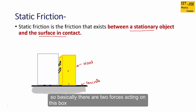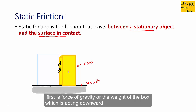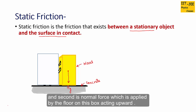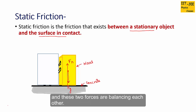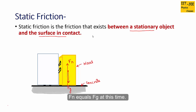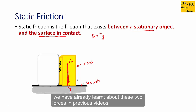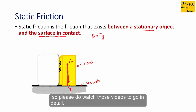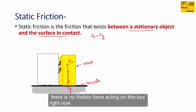There are two forces acting on this box. First is the force of gravity, or the weight of the box, acting downward. Second is the normal force applied by the floor on the box, acting upward. These two forces balance each other: Fn equals Fg at this time. There is no friction force acting on this box right now.